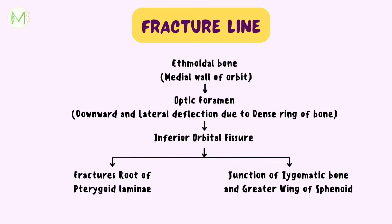From this point, the fracture line descends and fractures the roots of the pterygoid laminae at its base. The inferior orbital fissure constitutes a natural line of weakness from its anterior and lateral end, and on each side, a further line of fracture passes across the lateral wall of the orbit adjacent to the junction of the zygomatic bone with the greater wing of sphenoid. The fracture line separates the zygomatic bone from the frontal bone near the frontozygomatic suture, then inclines laterally and joins the previous line of fracture on the medial wall of the orbit. Hence, the entire middle third is detached from the dense cranial base.